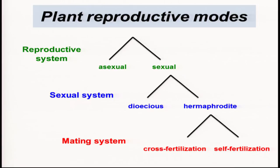We talk about the reproductive system as the relative balance between sexual and asexual reproduction — most species lie on a continuum between the two. If we focus just on the sexual system, the majority of species are hermaphroditic, but some are dioecious with separate sexes, and there are even some species in which males, females, and hermaphrodites coexist, though that's quite unusual.